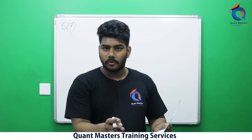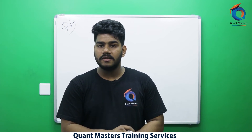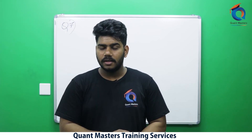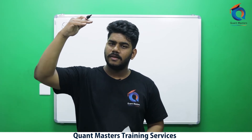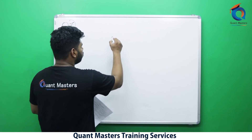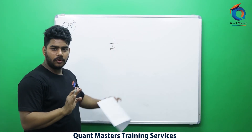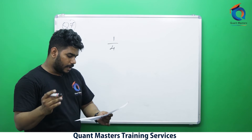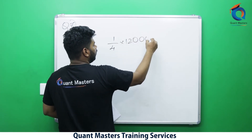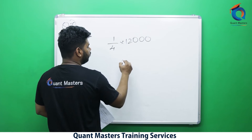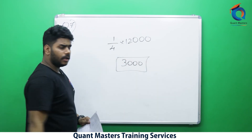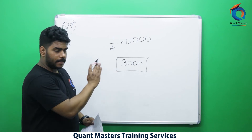In one year I get 5% profit; in five years I get 5 × 5 = 25% profit. 25% = 25/100 = 1/4 of the amount. So profit = 1/4 of the principal. Principal is ₹12,000, so profit = 12,000 / 4 = ₹3,000. The concept is clear — please write it down.